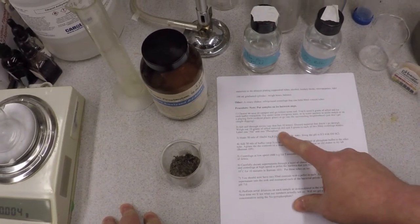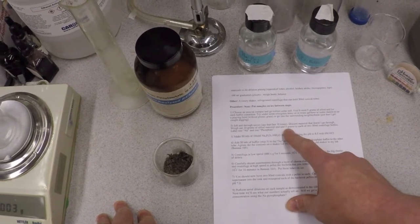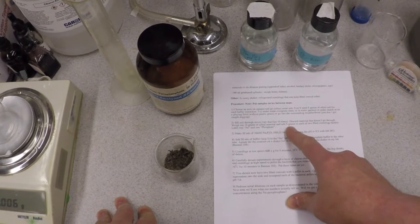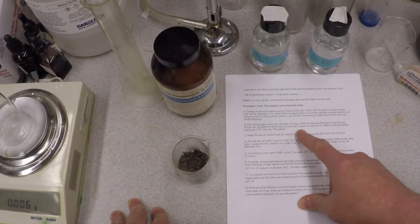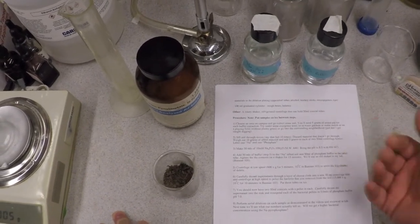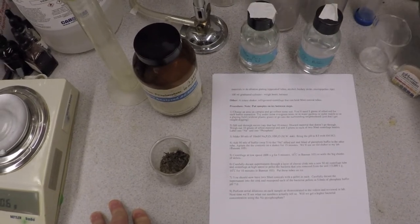You're going to sift it through the sieves. You're going to want to end up with essentially 10 grams, 5 grams in each of these bottles. One's going to be for sodium, one's going to be for the sodium pyrophosphate, one's for the regular sodium phosphate buffer.